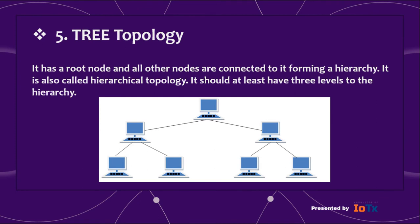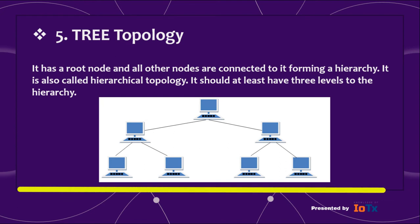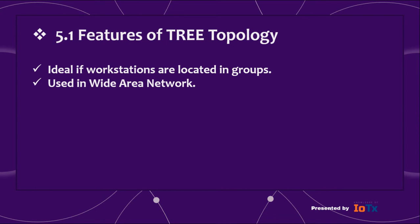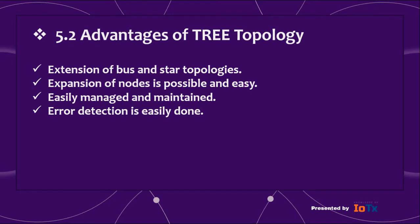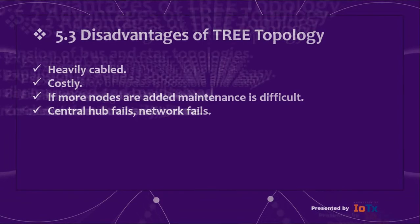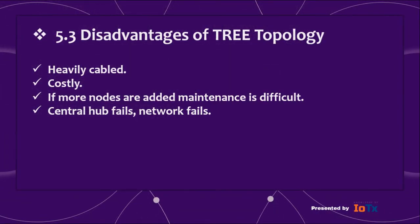Number five: tree topology. It has a root node and all other nodes are connected to it, forming a hierarchy. It is also called hierarchical topology and should have at least three levels. Features: ideal if workstations are located in groups, and used in wide area networks. Advantages: it is an extension of bus and star topologies; expansion of nodes is easy; easily managed and maintained; and error detection is easily done. Disadvantages: heavily cabled, costly if more nodes are added, maintenance is difficult, and if the central hub fails, the network fails.